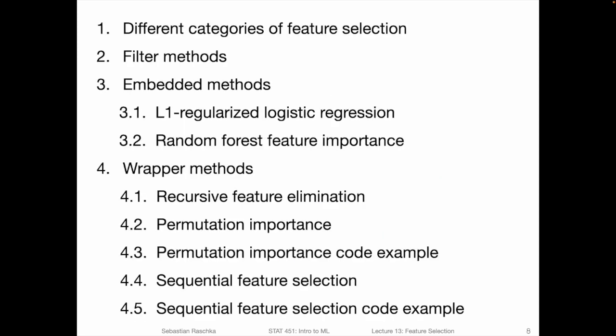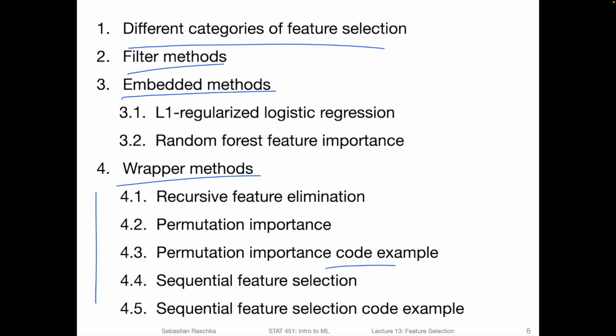Okay, so this was a small hands-on example. Before we end this video and move on to the next, I wanted to give you a brief overview of the different topics I have in mind for this lecture. There are different types of feature selection algorithms: filter methods, embedded methods, and wrapper methods, which we will be discussing in more detail in subsequent videos. The wrapper method section is pretty long because I'm also including code examples to show you exactly how I did this feature selection approach. So let me end this video and I will see you back in the next video when we talk about the different categories of feature selection.